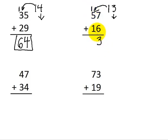We move the 1 over here, and then we add up this column. 1 plus 5 is 6 plus 1 is 7. So 57 plus 16 is 73.